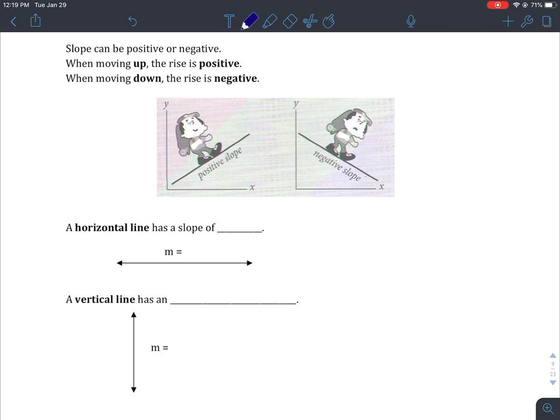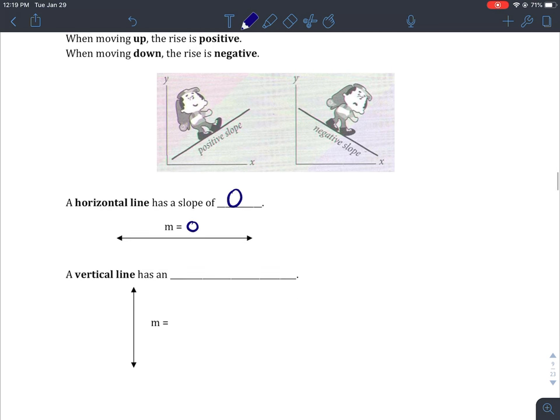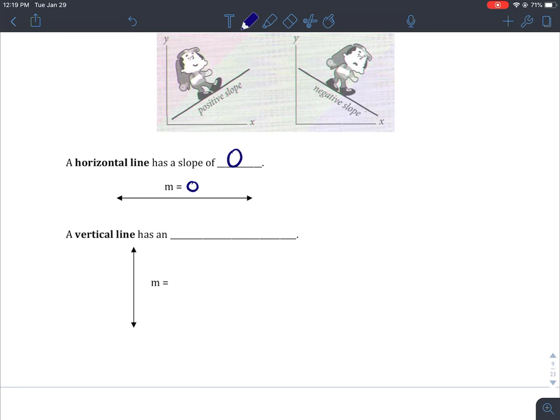A horizontal line has a slope of zero. It's flat - we aren't rising, we aren't going up or down, so our rise is zero, which means our slope is zero.